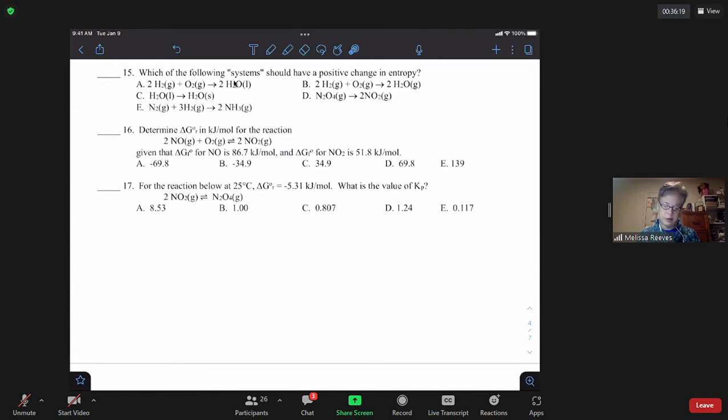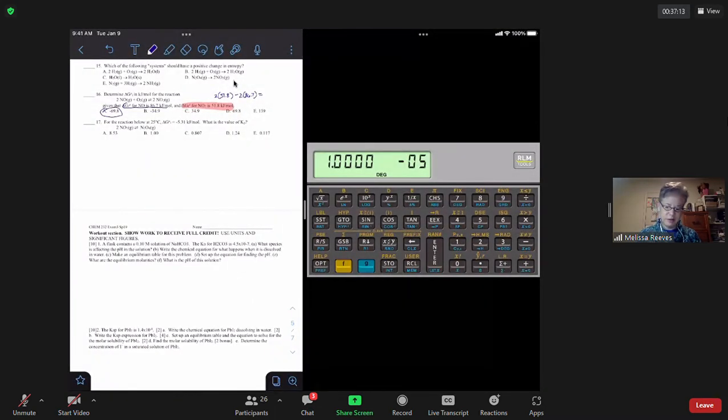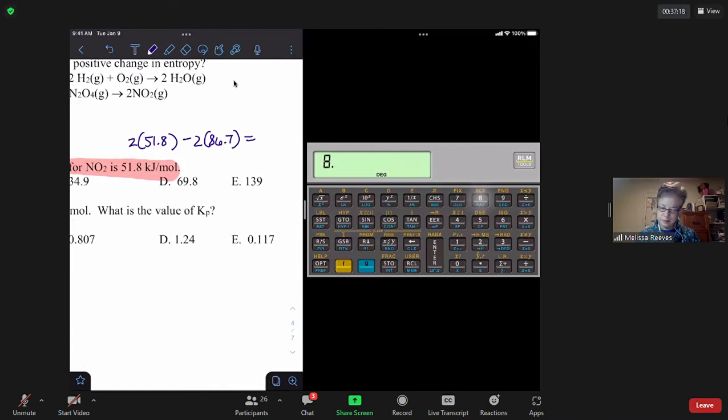So that was question seven. And 16 and 17. 16 is a products minus reactants question. That's our product and this is the reactant. So we have two times 51.8 minus two times 86.7. And oxygen is an element in the standard state. So it's going to be zero for the Delta G of formation. And so that's like a hundred minus a hundred and 70. Negative 70. Maybe I should be smart and actually calculate it instead of just doing it in my head. Yeah. Negative 69.8.